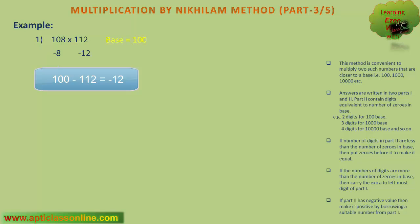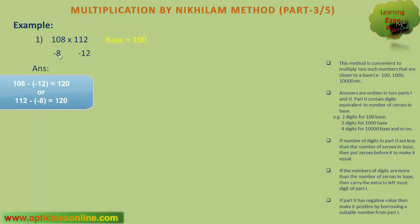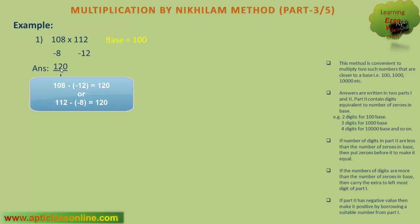As we know, the answer contains two parts. In the first part, we will either write the difference between 108 and minus 12, or the difference between 112 and minus 8. So the difference is 120, because if we subtract minus 12 from 108, we get 120. This is the first part of our answer. In the second part, we will write the multiplication of minus 8 and minus 12, that is, 96.